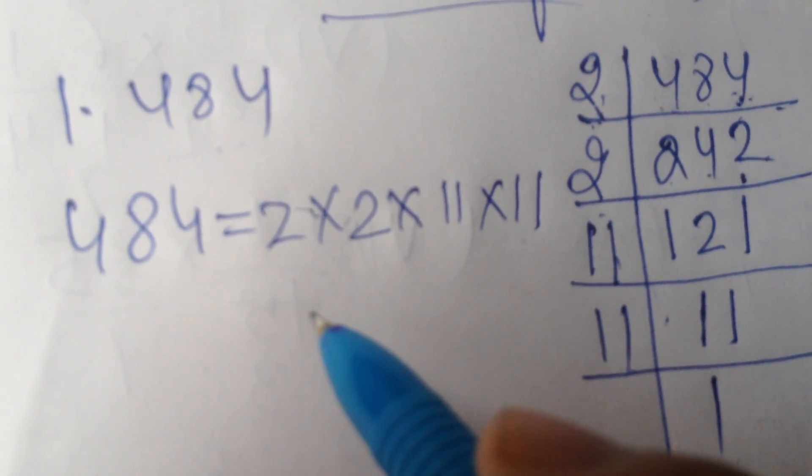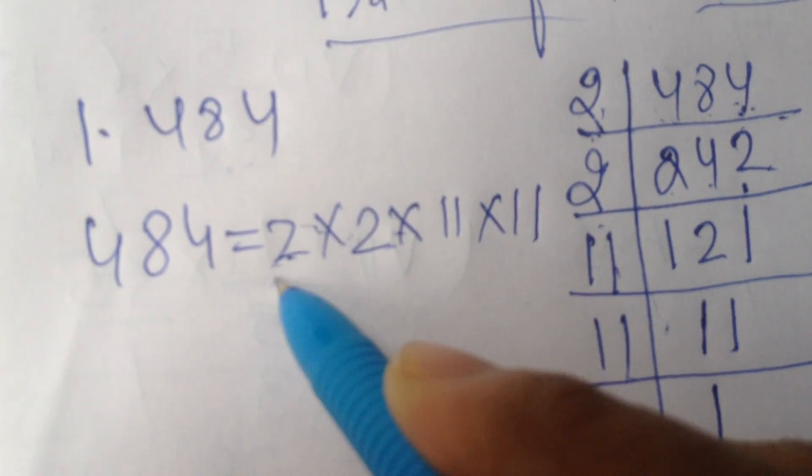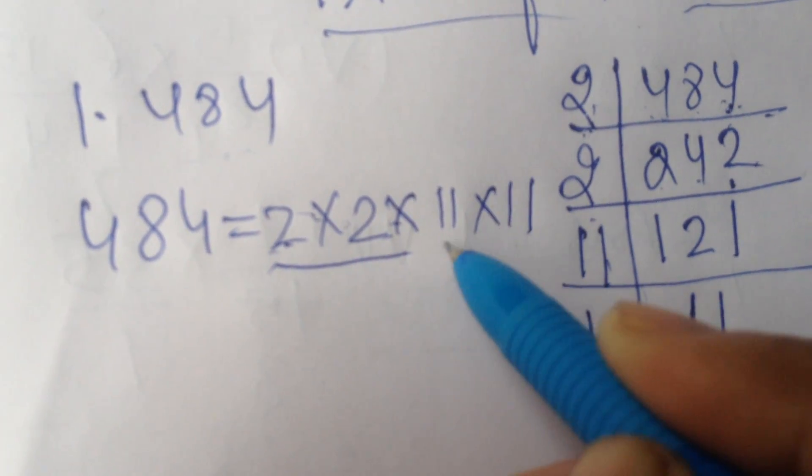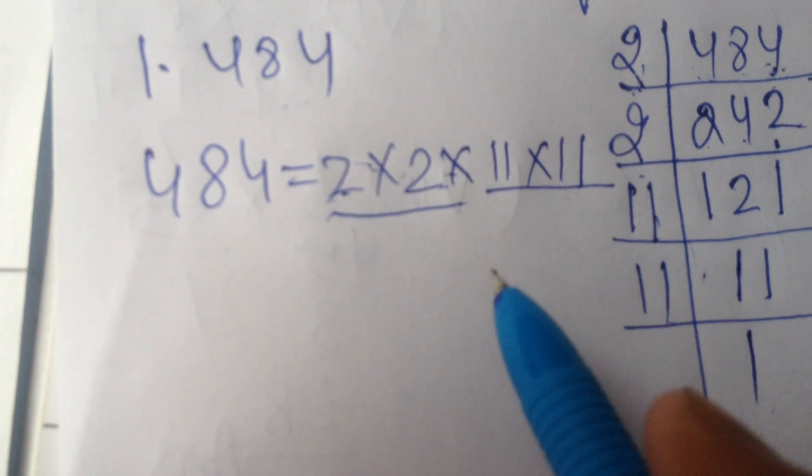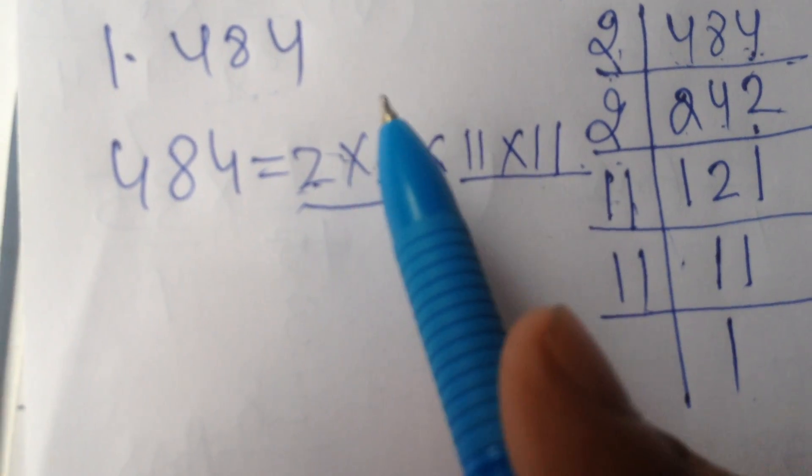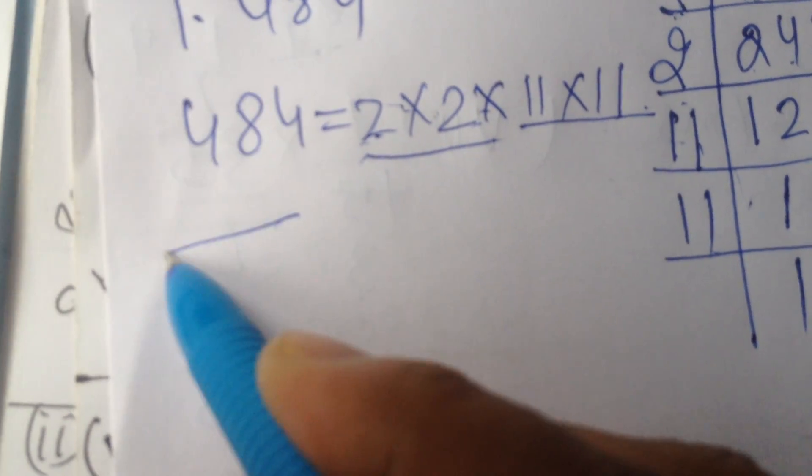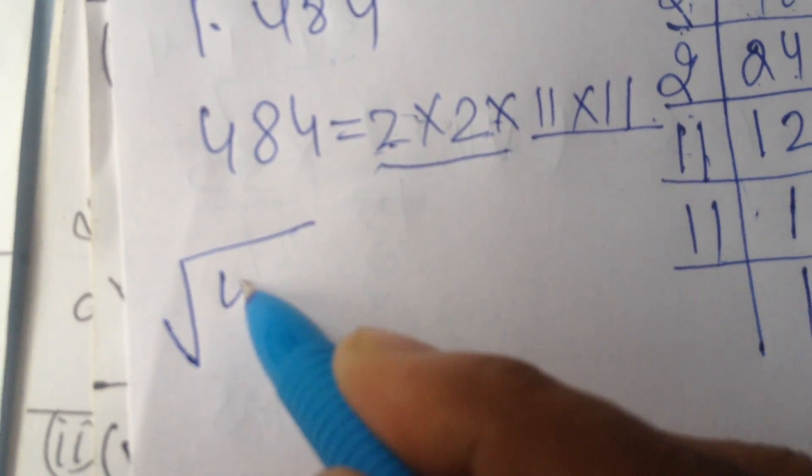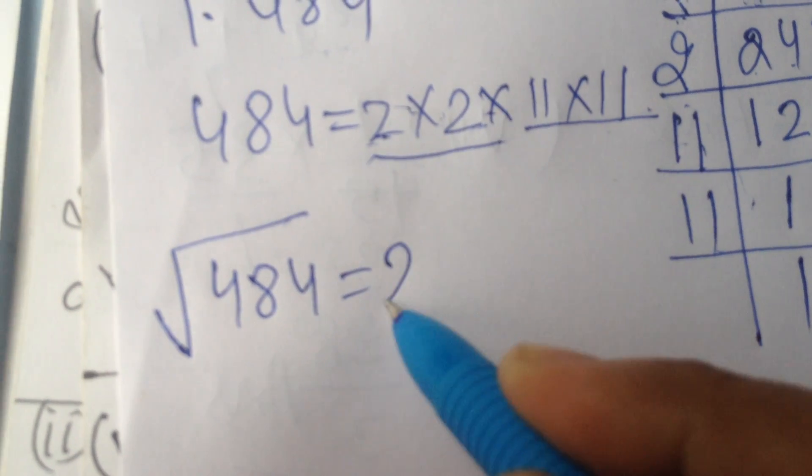Then we will write 484. Write its factors with multiply sign: 2 multiply 2, 2 times 2, and 11 two times, into 11, into 11. Now we have to make pairs of 2, 2. These 2 make one pair. Here 11 makes one pair.